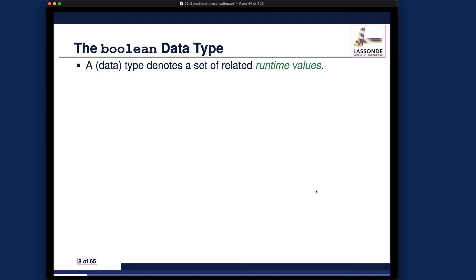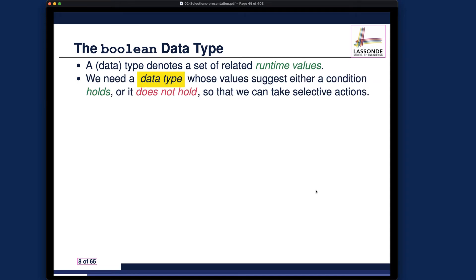If you declare a variable to be of data type character, that means at runtime you can only store exactly one character into that variable, like a box. So now what about when we have Boolean data type? Whenever you talk about a data type, you have to know what are all the possible values in that particular type. In the case of integer, you got 2 to the power of 32 possibilities.